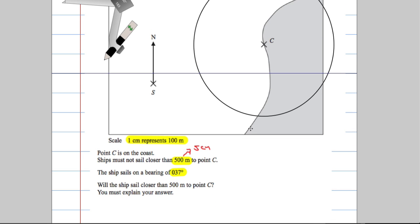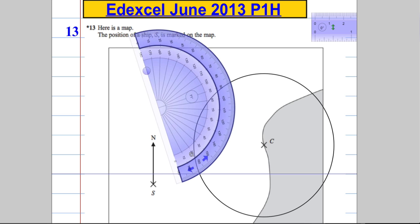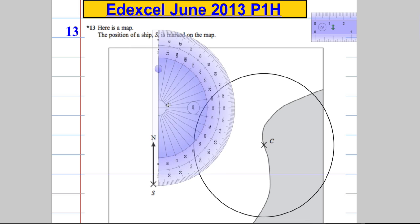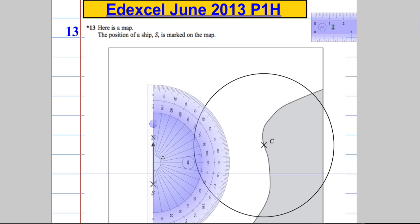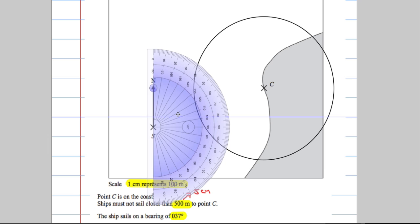That's the first part. It also tells us that they sail on a bearing of 037. Now they're going to sail from this place here. When we're doing bearings, we always measure in a clockwise direction from north. So I'm going to take the protractor down here and set it up.